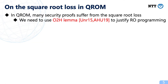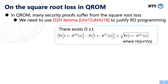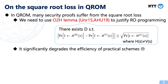In the Q-ROM, many security proofs suffer from square root loss. This is because in the Q-ROM, we need to use the one-way-to-hiding lemma proposed by Unruh to justify random oracle programmings. Roughly speaking, the one-way-to-hiding lemma says that there exists an extractor D such that the advantage gap caused by random oracle programming can be bounded by the square root of the probability that D extracts the programmed point S. Square root loss requires much longer security parameters for building blocks to achieve a reasonable security level, significantly degrading the efficiency of cryptographic primitives. So we need to avoid square root loss, especially when we study practical schemes.